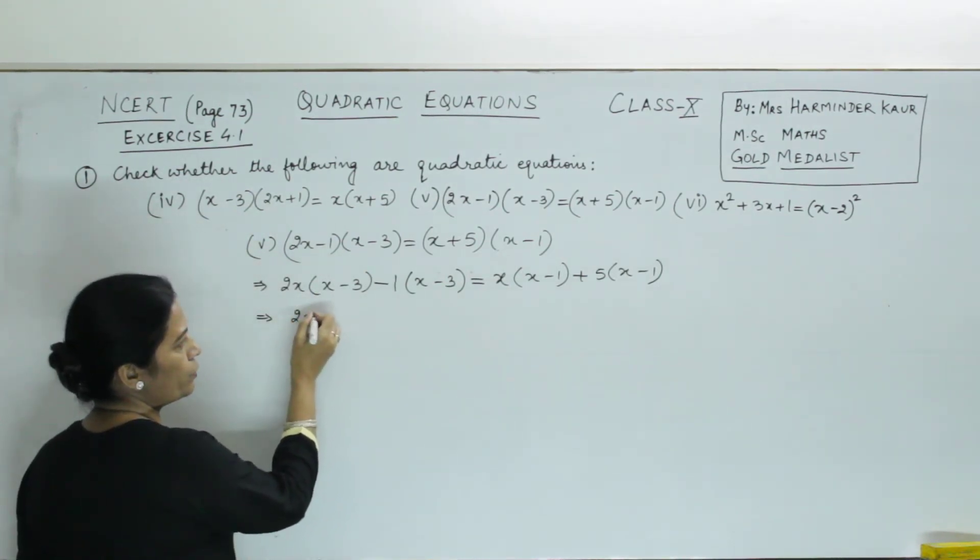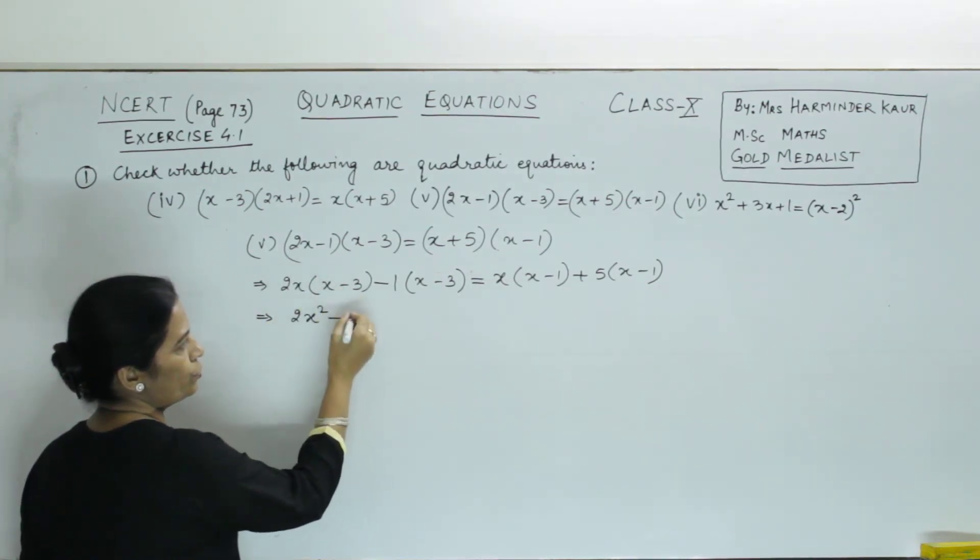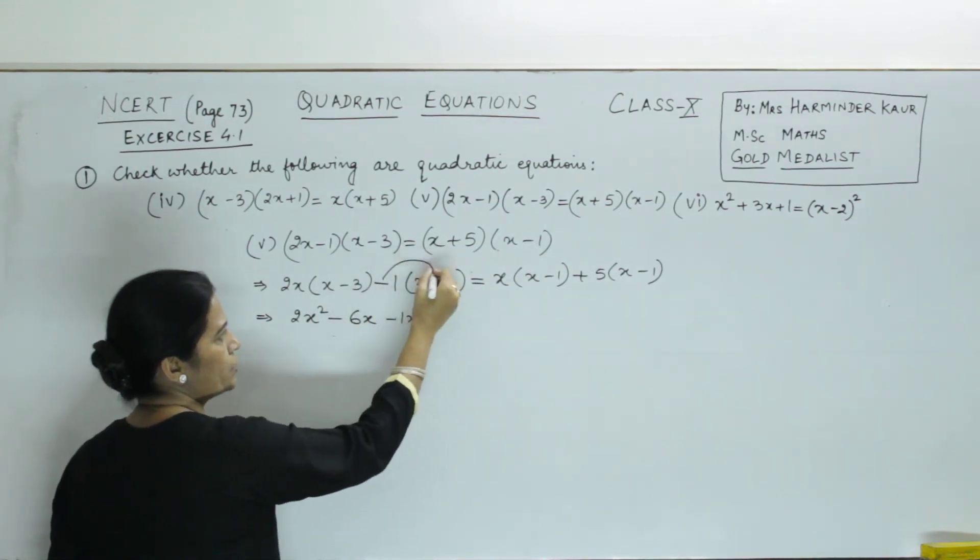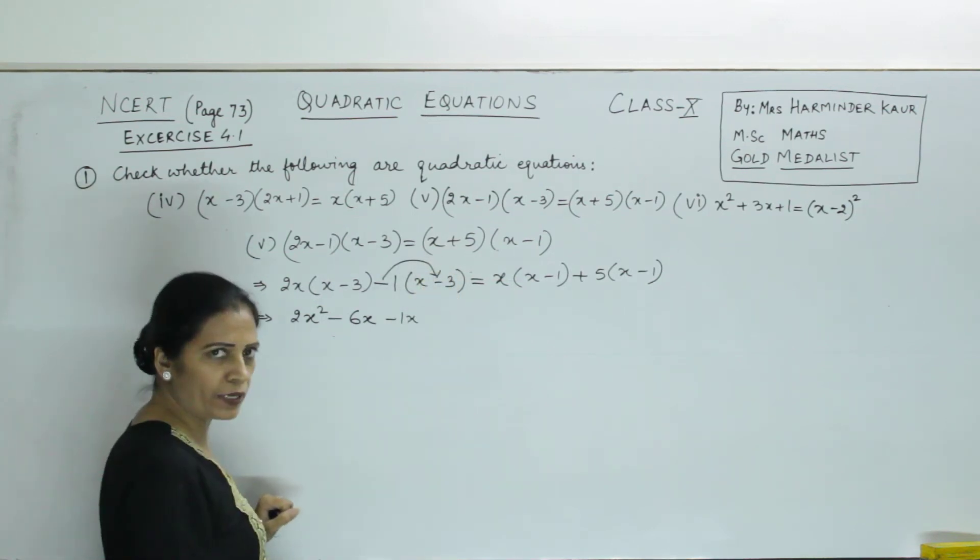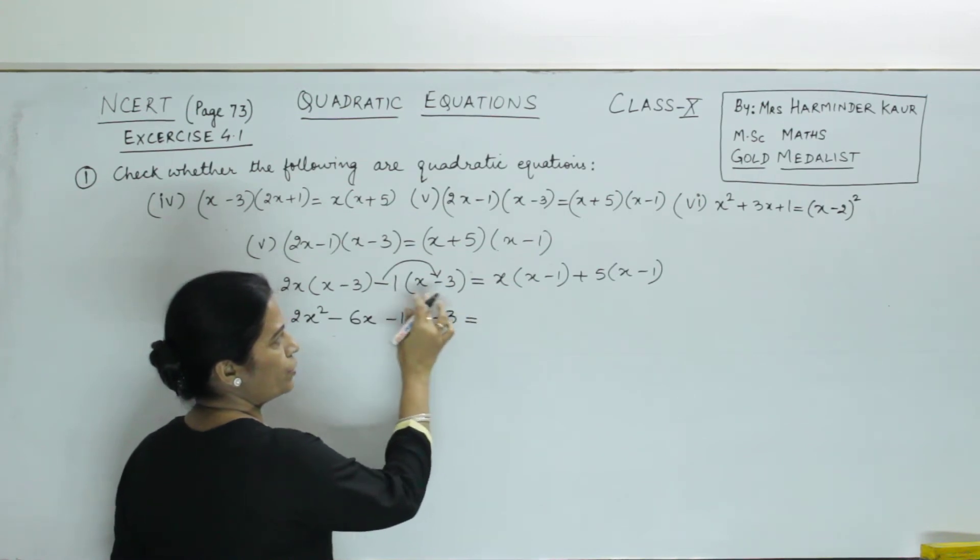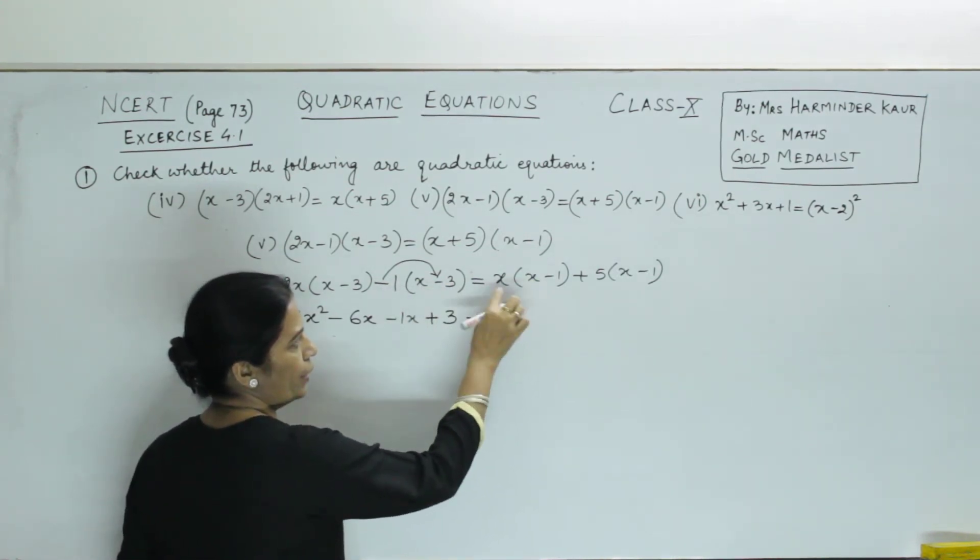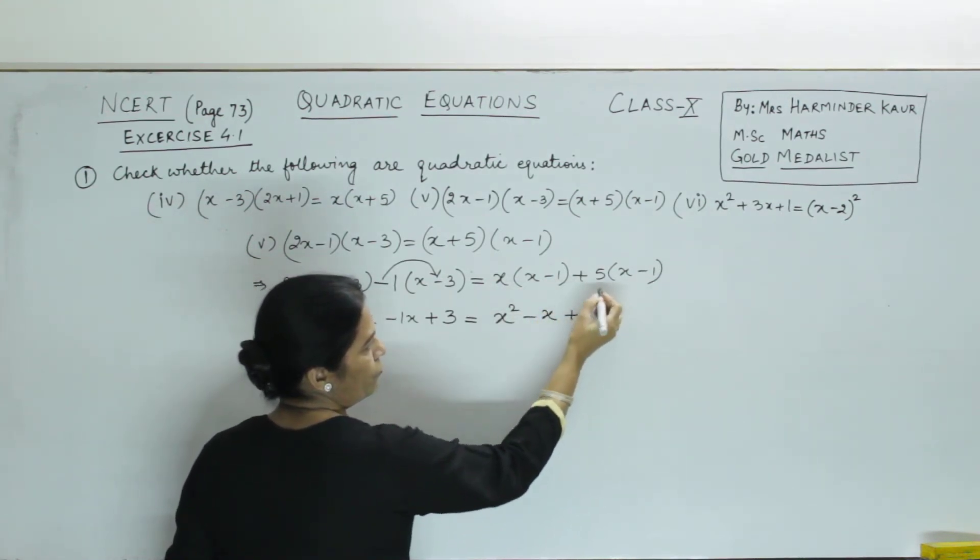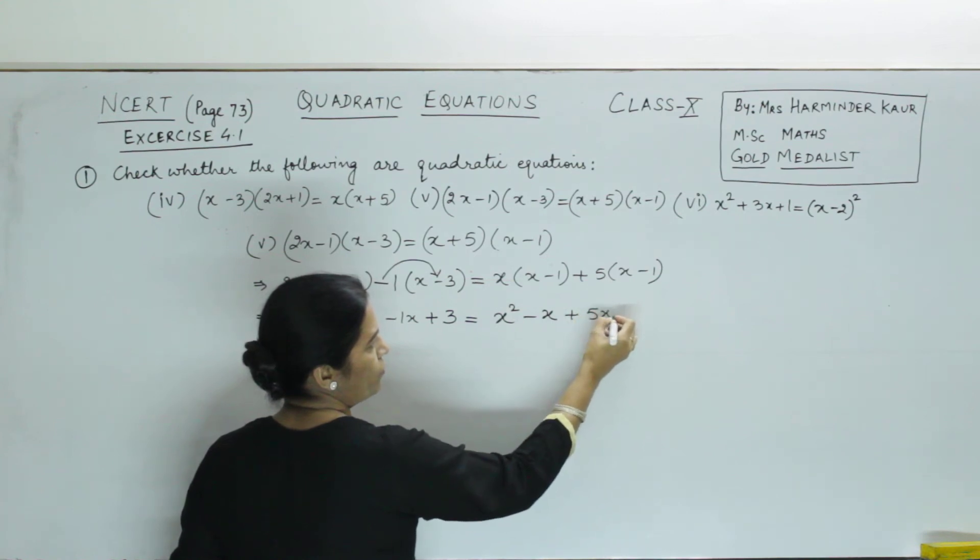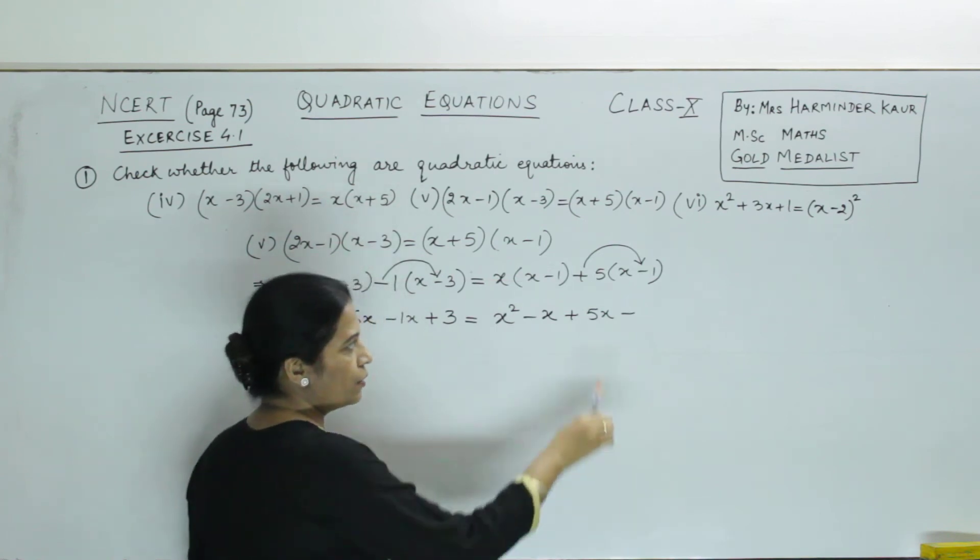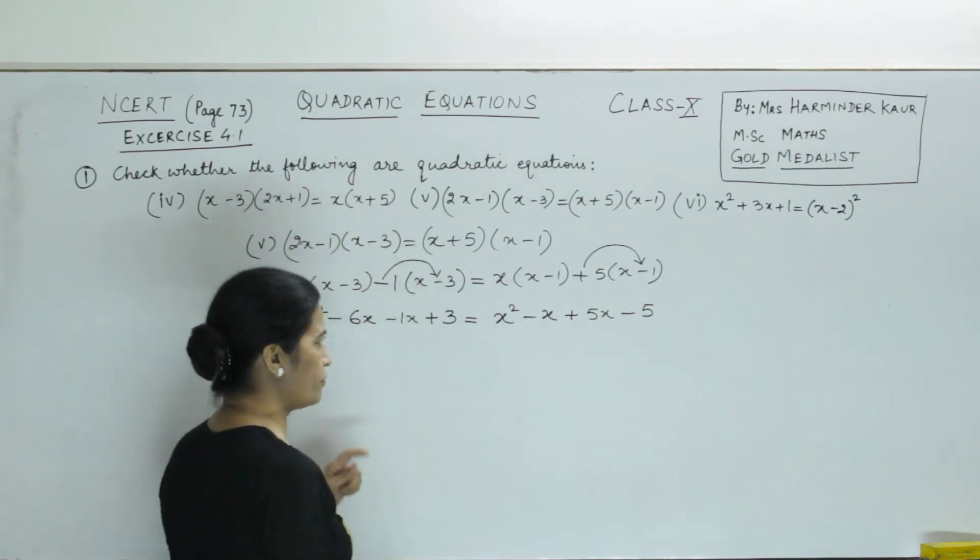Now, we open the bracket. 2x into x. So, it becomes 2x². 2x into minus 3. So, it becomes minus 6x. Minus 1 times x. Minus and minus, product is positive. So, number is 3, 1 into 3, we multiply. This is x². x into minus 1. It is minus x. Plus 5 into x. So, it is 5x. Plus into minus, so it is minus 5 into 1. Then, it is minus 5.